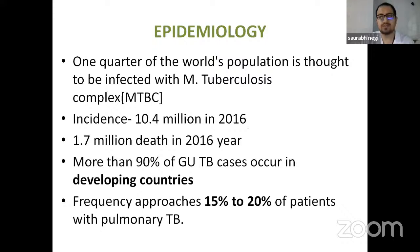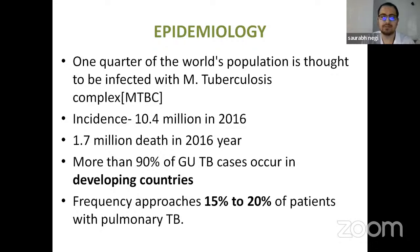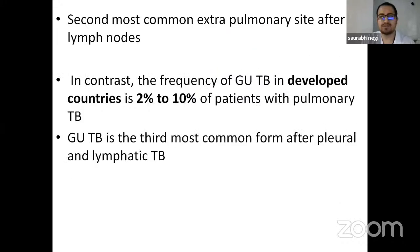One quarter of the world population is thought to be infected with Mycobacterium tuberculosis complex, with an incidence of 10.4 million and average deaths of 1.5 million in 2016. More than 90% of genitourinary TB occur in developing countries with a frequency of 15 to 20% with pulmonary TB. It is the second most common extra-pulmonary site after the lymph node. In developed countries, the frequency is 2 to 10%, and GUTB is the third most common form after pleural and lymphatic TB.